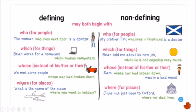The relative pronoun 'where' is used for places. Defining example: 'What is the name of the place where you went on holiday?' — we are specifying which place. Non-defining example: 'Jane has just been to Oxford, where her dad lives.'